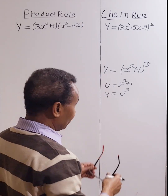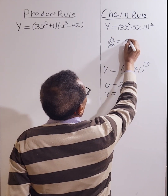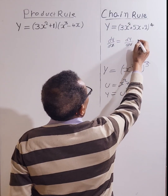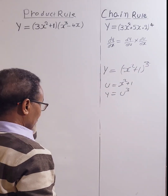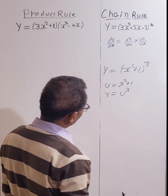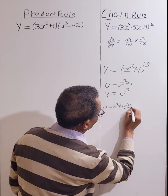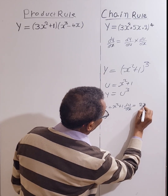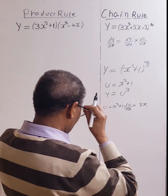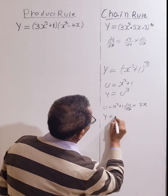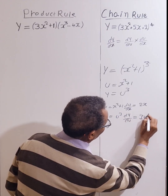then the derivative is given by dy/dx equals dy/du times du/dx. Let's get the derivative of each function first. So u equals x² + 1, then du/dx equals 2x — the constant differentiates to zero. Then y equals u³, so dy/du equals 3u².